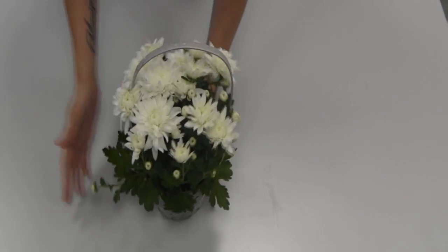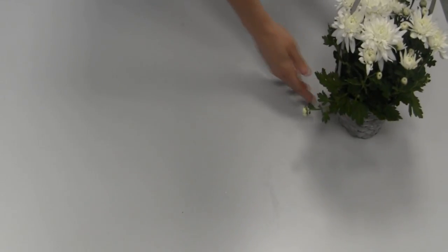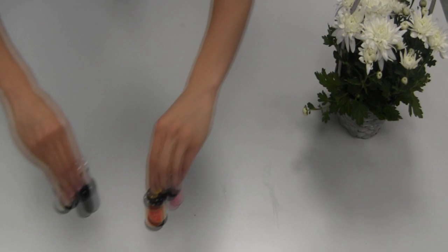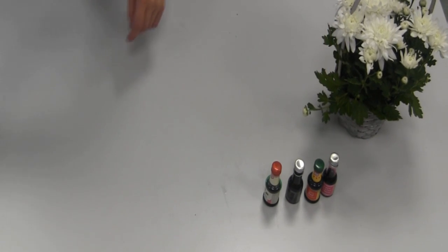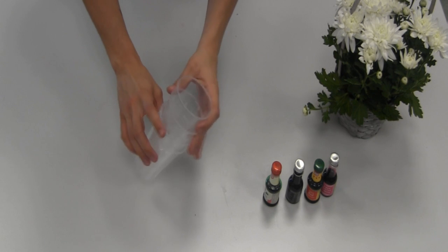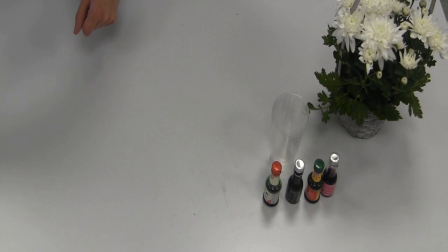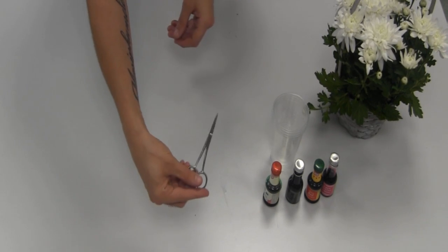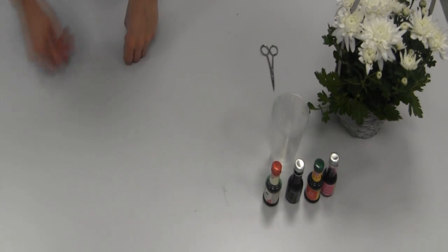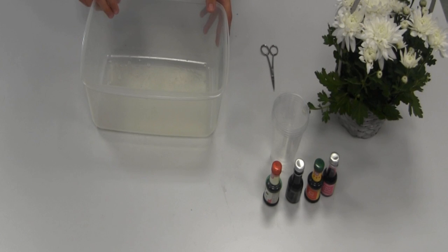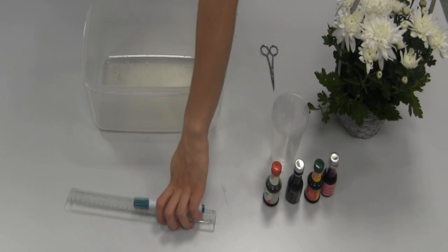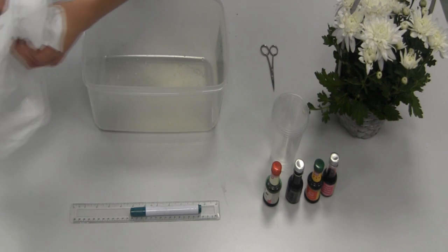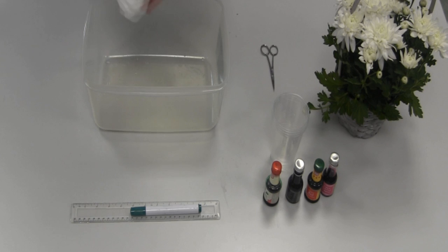For this experiment you will need some flowers, some different food coloring, a selection of cups that are the same, some scissors and a large tub. You may wish also to have a ruler and a marker pen. These are essential. You may also be advisable to have some kitchen roll on hand in case of a spillage.